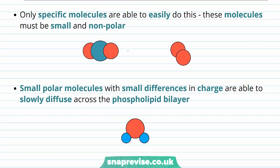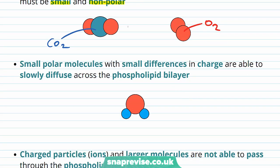So the only molecules that can do passive diffusion have particular properties. They have to be small and non-polar. So for example, carbon dioxide is a very small molecule and it's not polar, so it doesn't have any charge density on one particular part of the molecule. And therefore another example would be O2 or oxygen. You can have some other molecules that do this. So small polar molecules with small differences in charge can do this, but they'll do this a bit more slowly across the phospholipid bilayer.